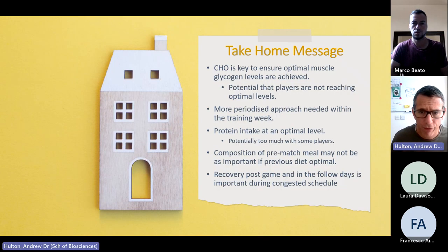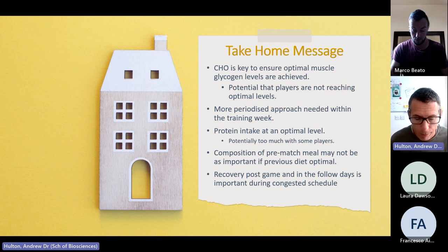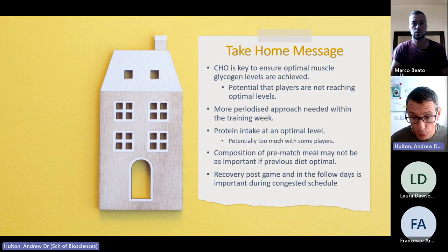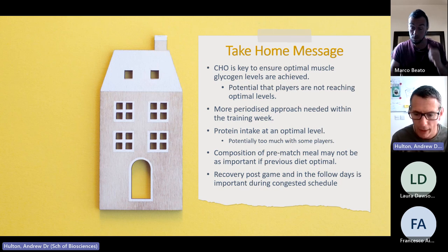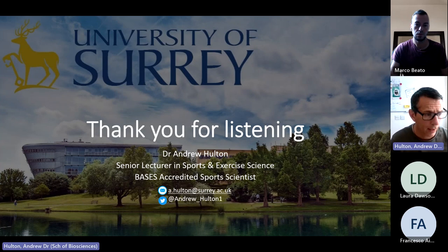Take-home points: carbohydrate is key to ensuring optimal muscle glycogen levels, and there's potential that players are not reaching optimal levels especially during training and recovery. A more periodized approach within the training week is needed. Protein intake is generally not an issue, though some players may be taking too much — though that's from one club. Pre-match meal composition may not be as critical as previously thought if the previous diet has been optimal, meaning players can eat what they're comfortable with to get in the right headspace. Recovery post-game and in following days is especially important during congested fixture schedules.